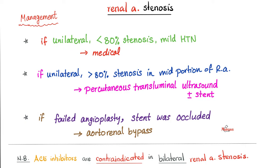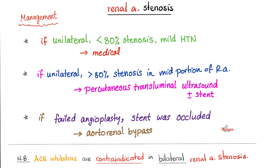For management of renal artery stenosis: if it's unilateral and less than 80% stenosis, use medical management — this patient with high blood pressure may benefit from ACE inhibitors, but not if stenosis is bilateral. If stenosis is unilateral but greater than 80% of the artery's diameter, intervention is needed: percutaneous transluminal angioplasty with or without stent placement. If that fails, open surgery is performed — bypassing the narrowing by connecting the aorta directly to the renal artery past the obstruction, restoring normal kidney perfusion and stopping excess renin release.